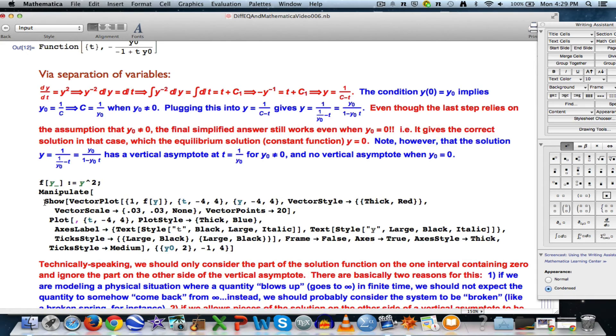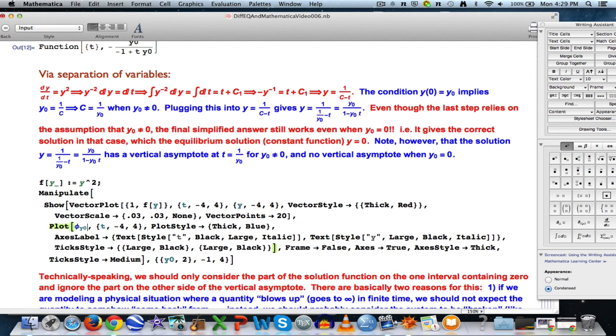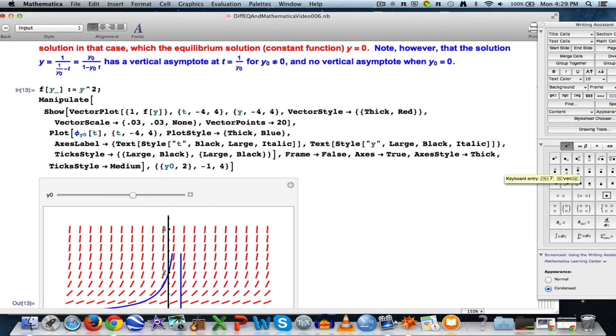Down here, if I'm going to use it, notice I've got Show, VectorPlot, Plot all inside of Manipulate. I only have one animation parameter, the initial condition. T is going to get plotted from negative four to four. I need to put the function name, which I can type as phi sub y0 without an underscore, and then put in of t here inside square brackets. This will plot it.